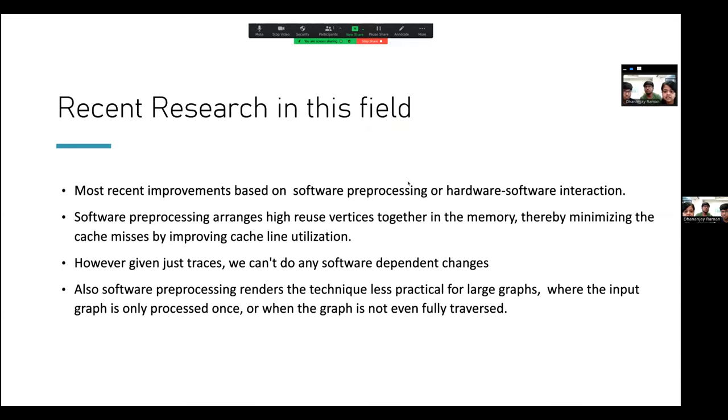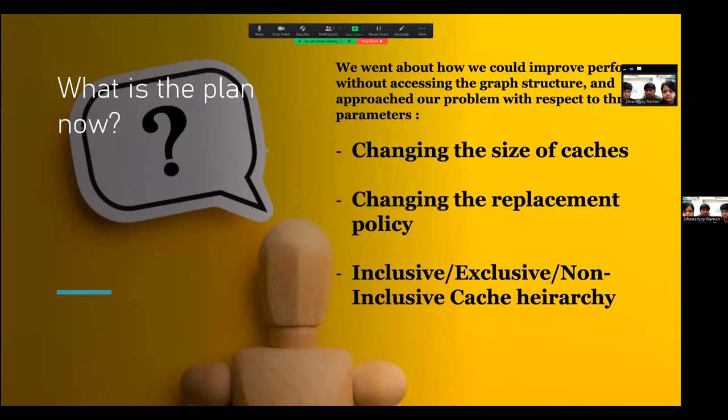Recent researches in this field have made improvements, but they are mostly based on software free processing or hardware software interaction. Given just the trace, we cannot do that. And even software free processing has its limitation as it is less practical for large graphs. So what is our plan now? We focus on three things: changing the size of cache lists, changing the replacement policy, and inclusive, exclusive, and non-inclusive cache hierarchies.